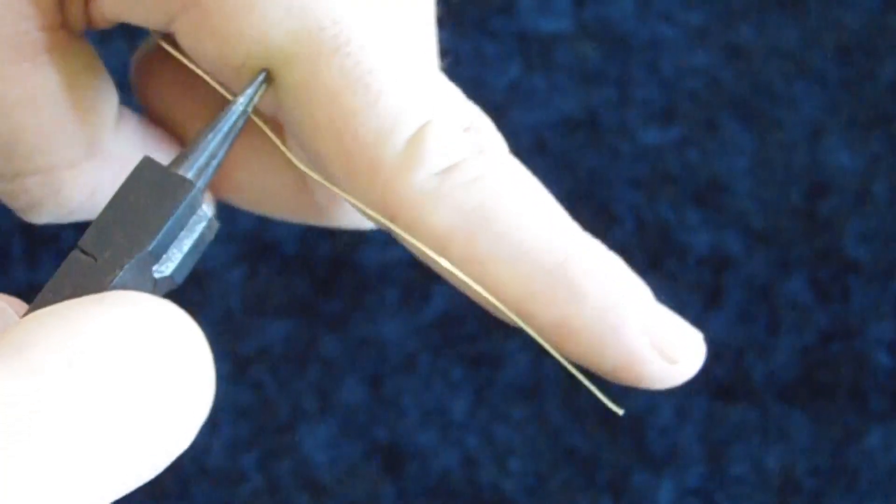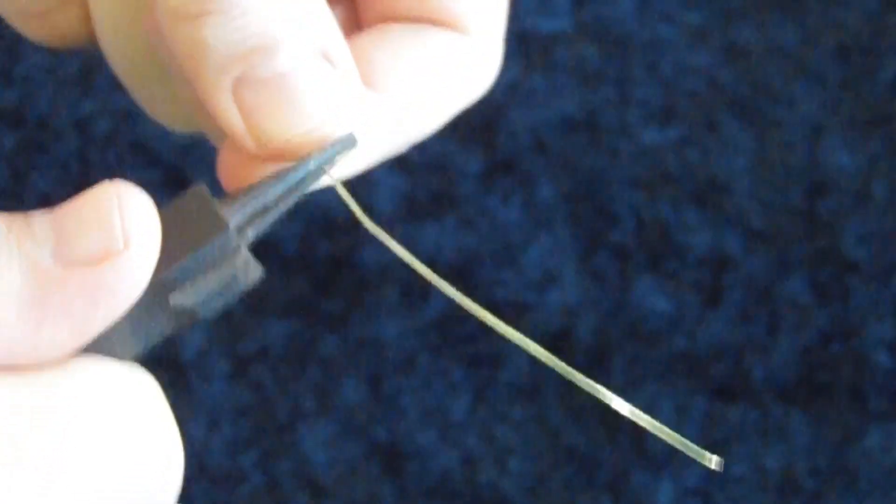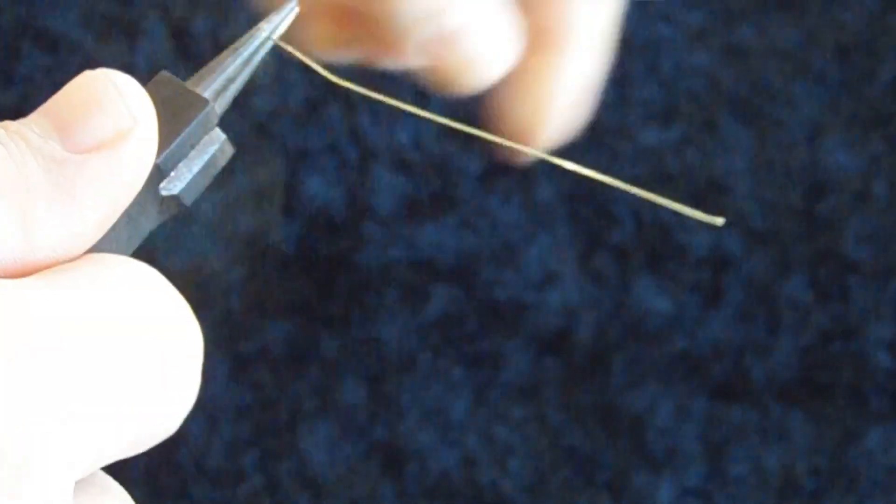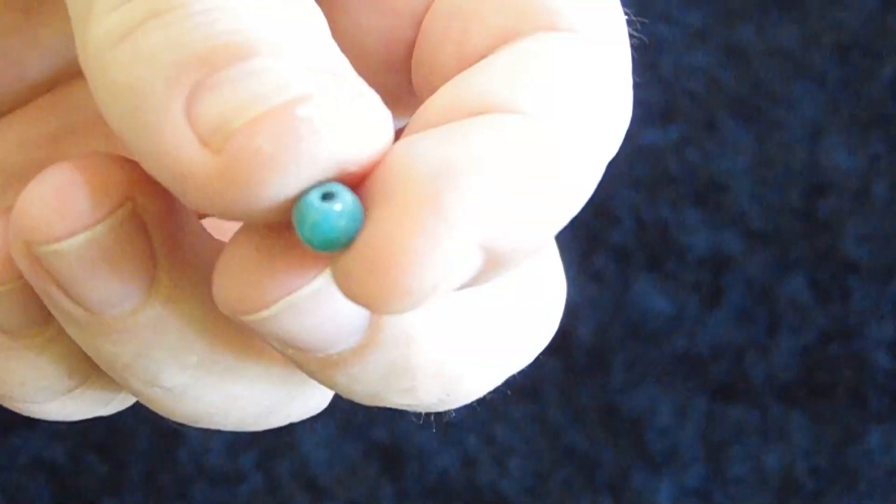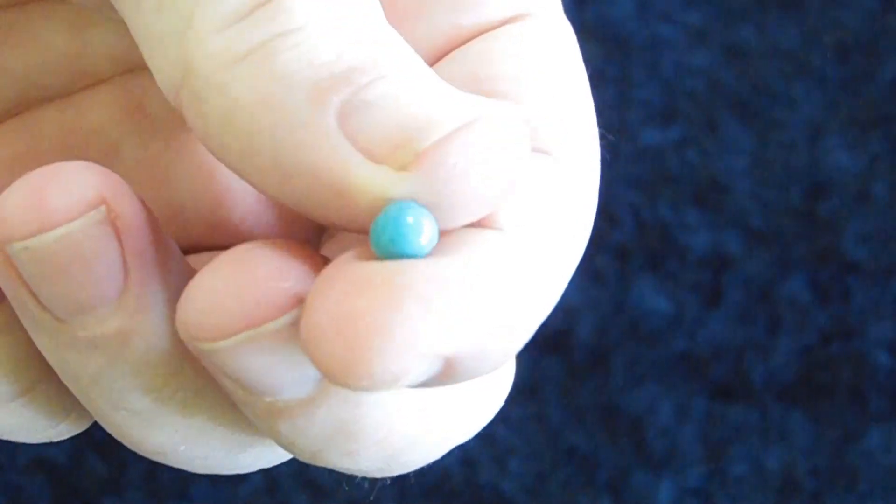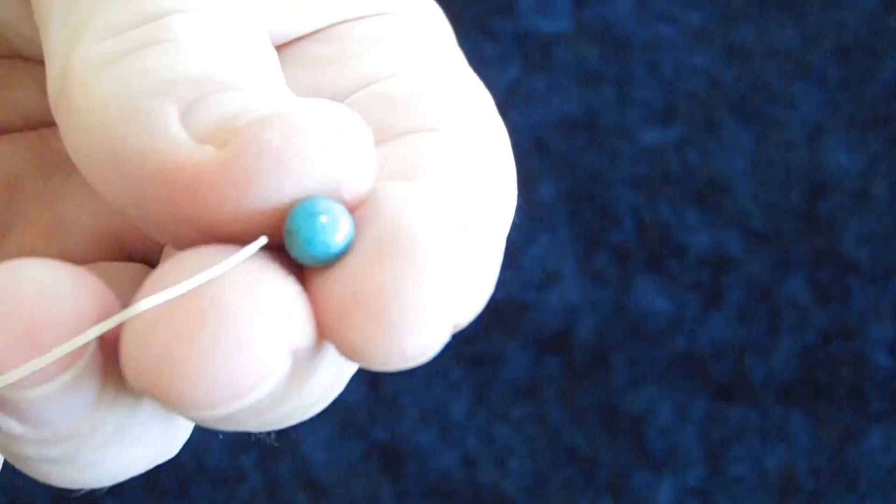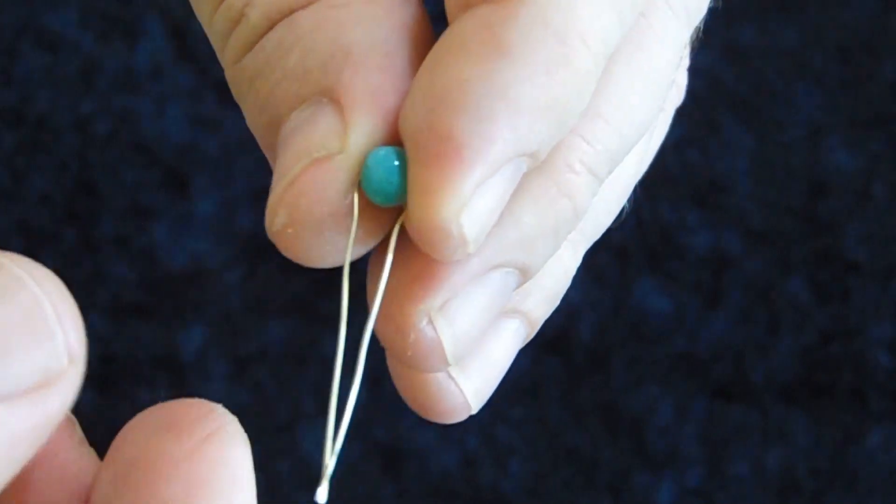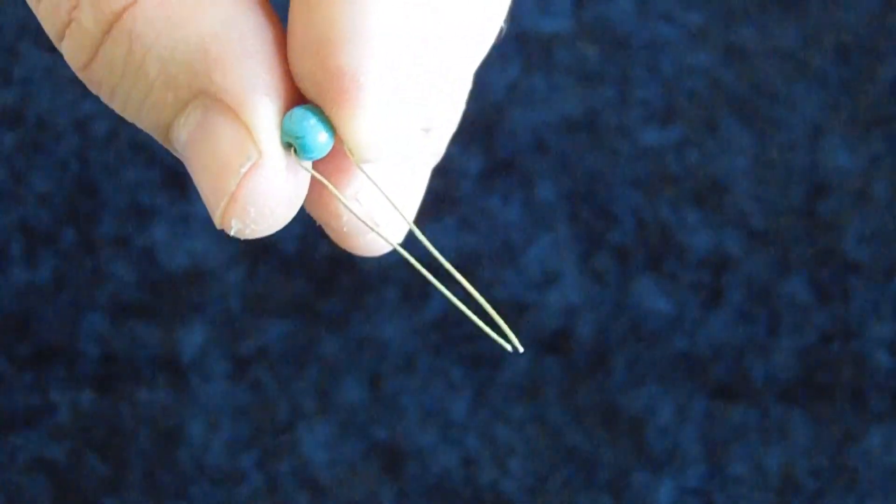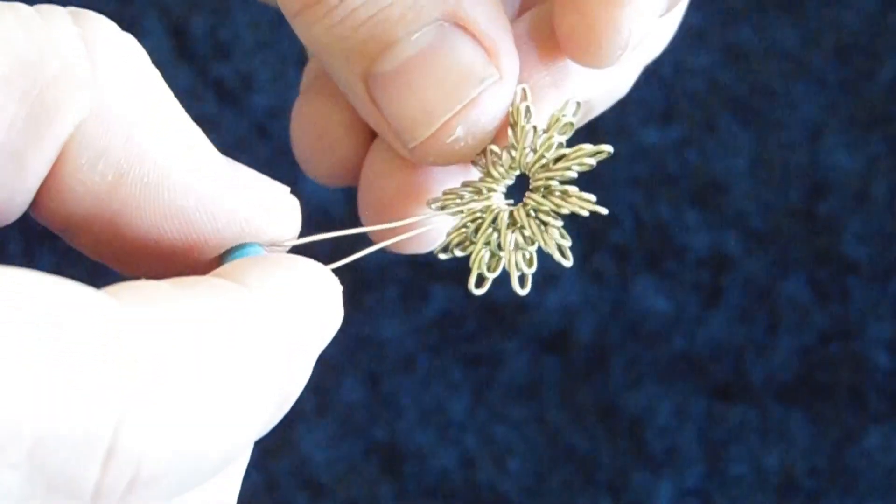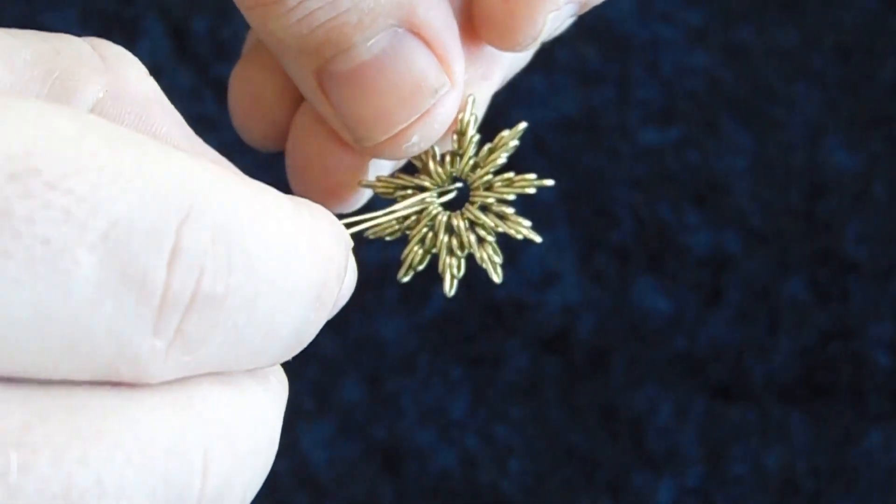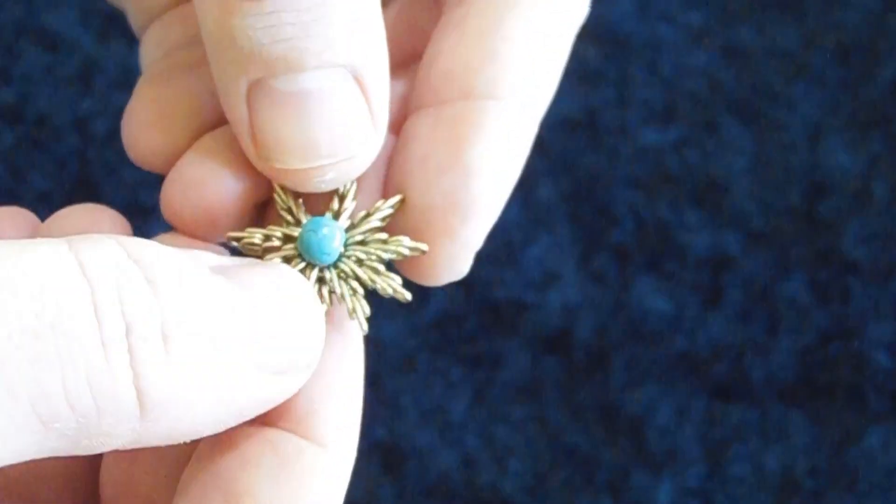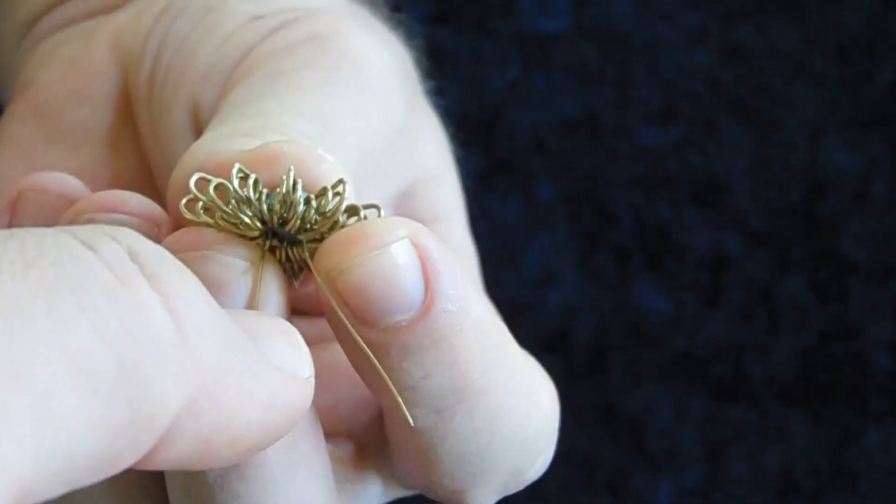To set the gemstone in place, we'll employ a small piece of 26-gauge wire. First, thread it through the hole in the gemstone, then bend both sides so they can pass through the central hole of our piece. Open the two ends of the wire to secure the gemstone in the center.